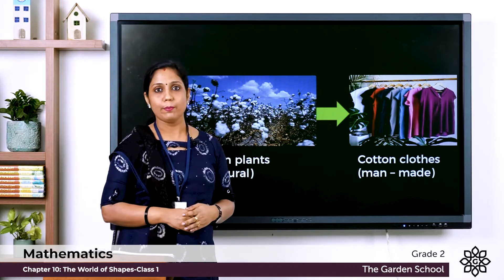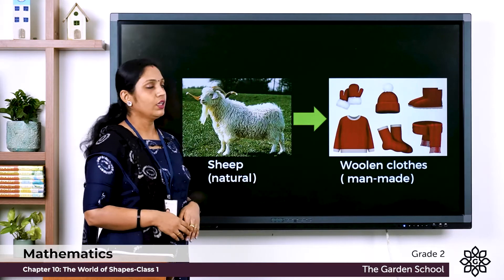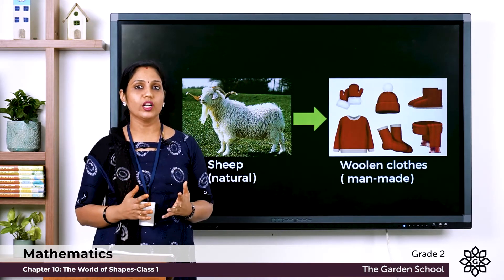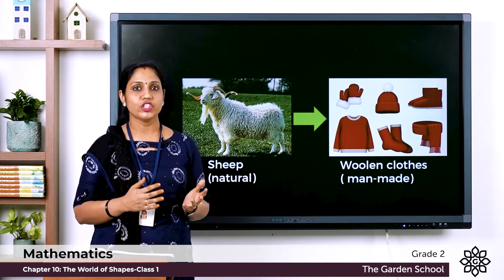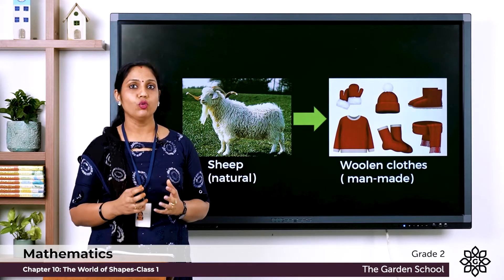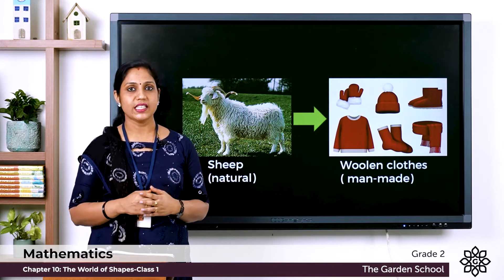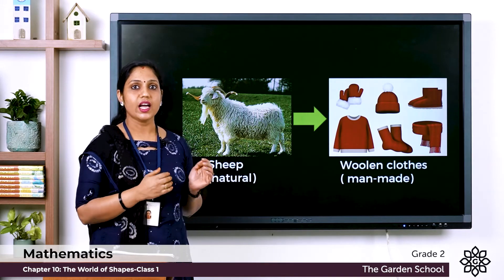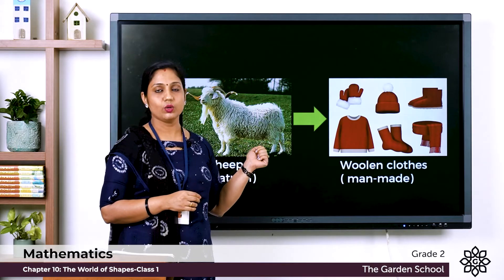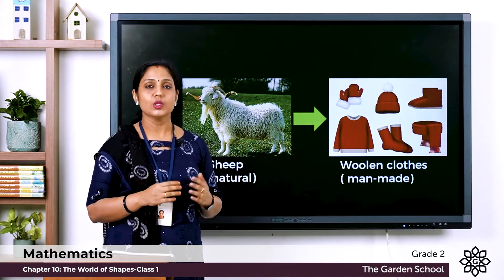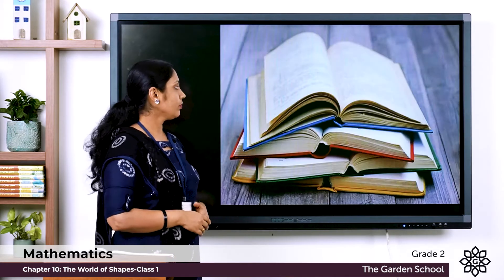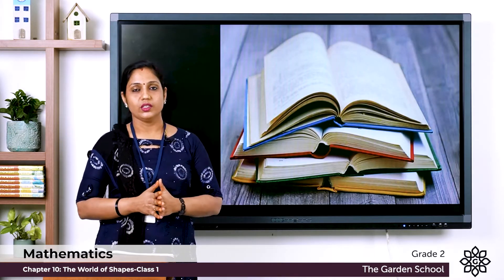What about woolen clothes? We get wool from sheep, camels, rabbits, and so on. These animals are natural things. From this wool we make woolen clothes in factories. So woolen clothes are man-made things.